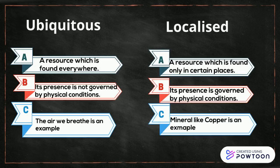Now we will talk about resources and physical conditions. Ubiquitous resources are independent of physical conditions, while localized resources are totally dependent on the physical condition.